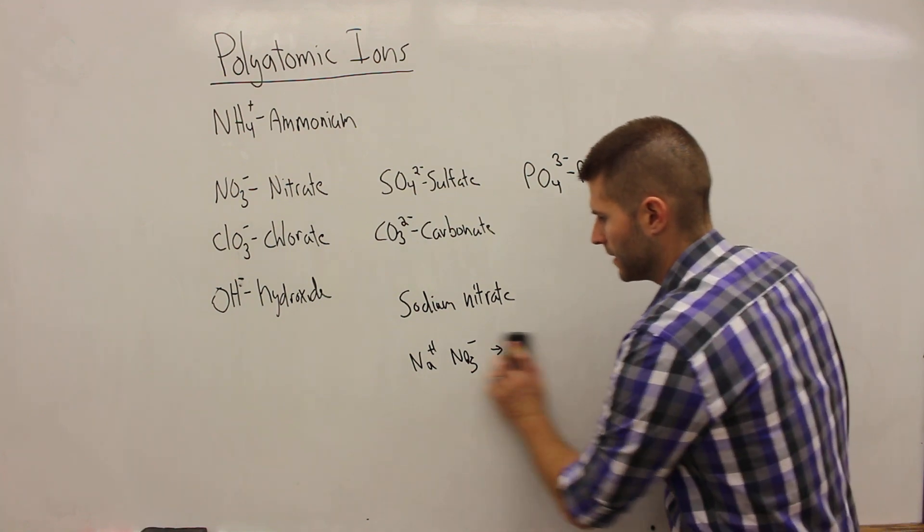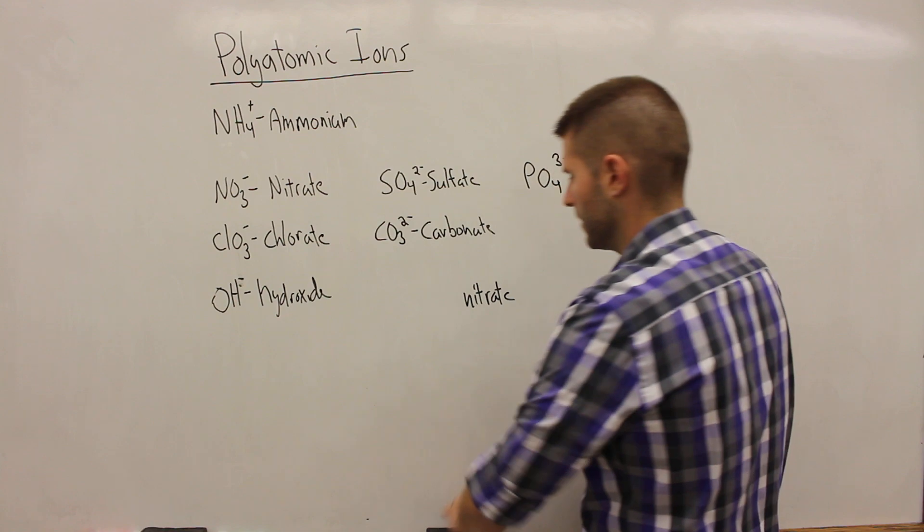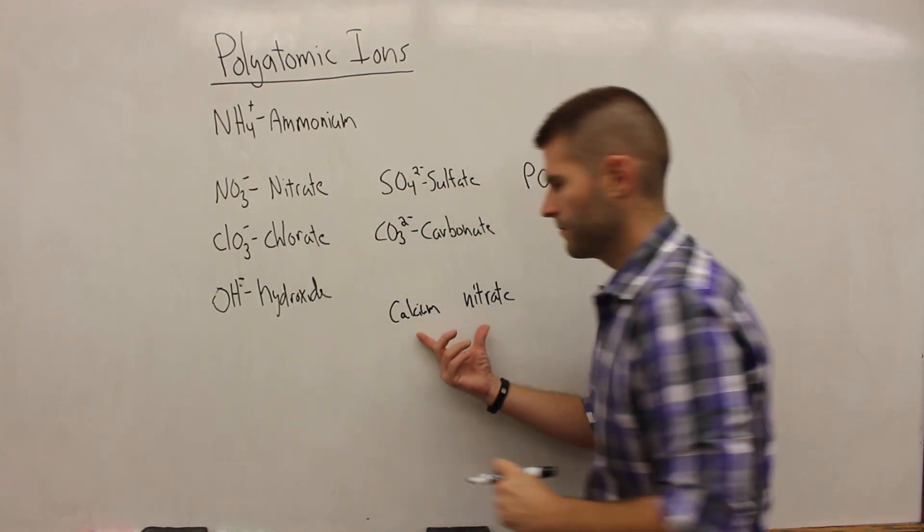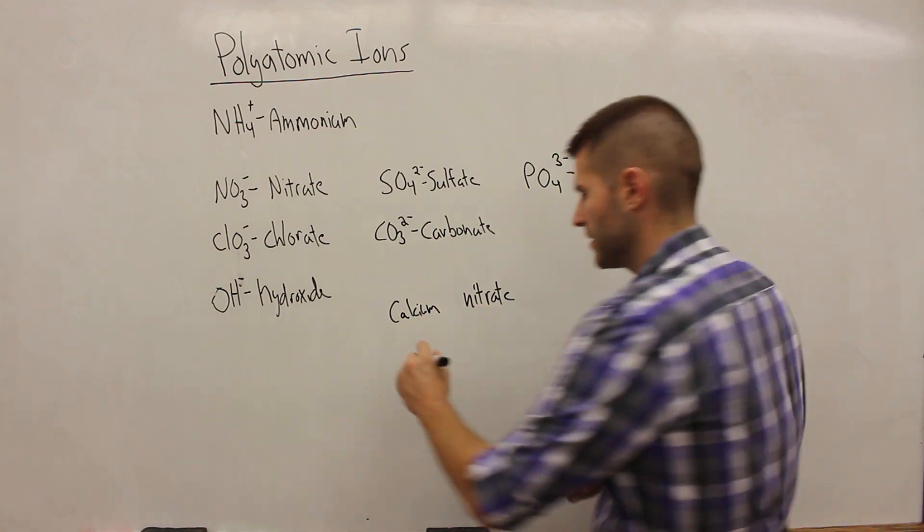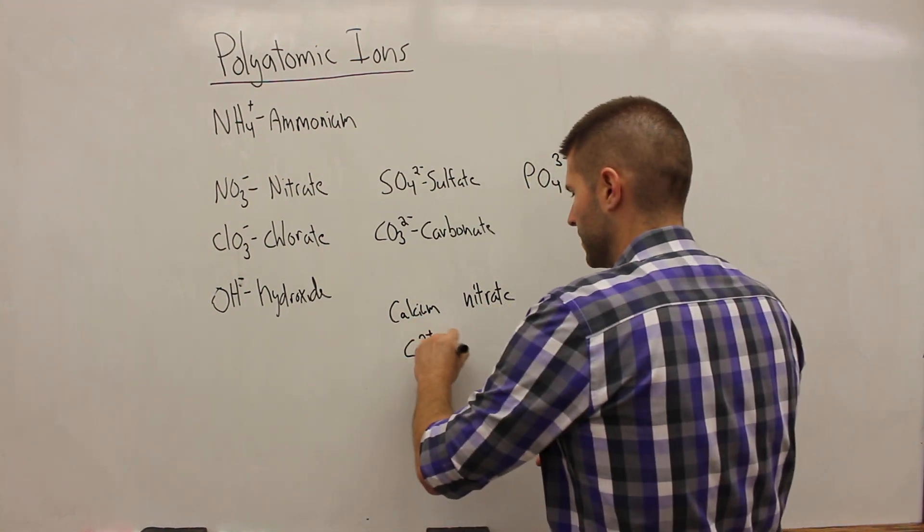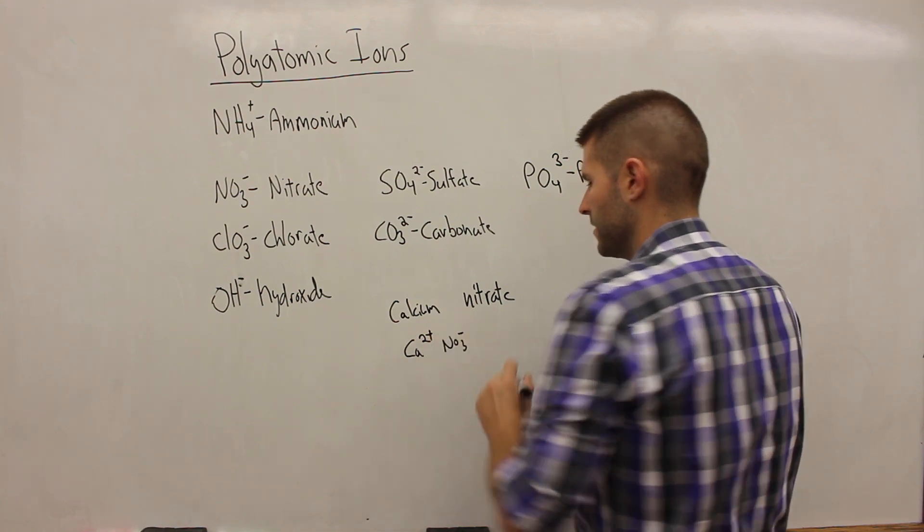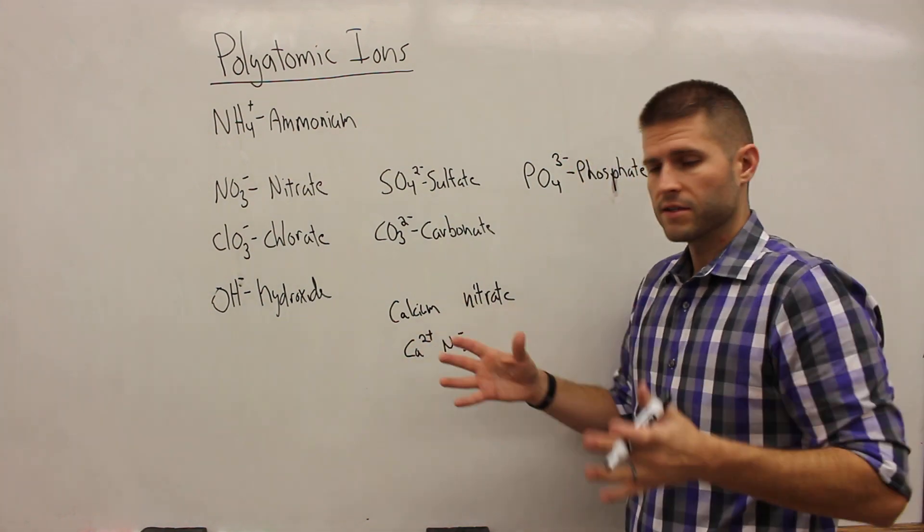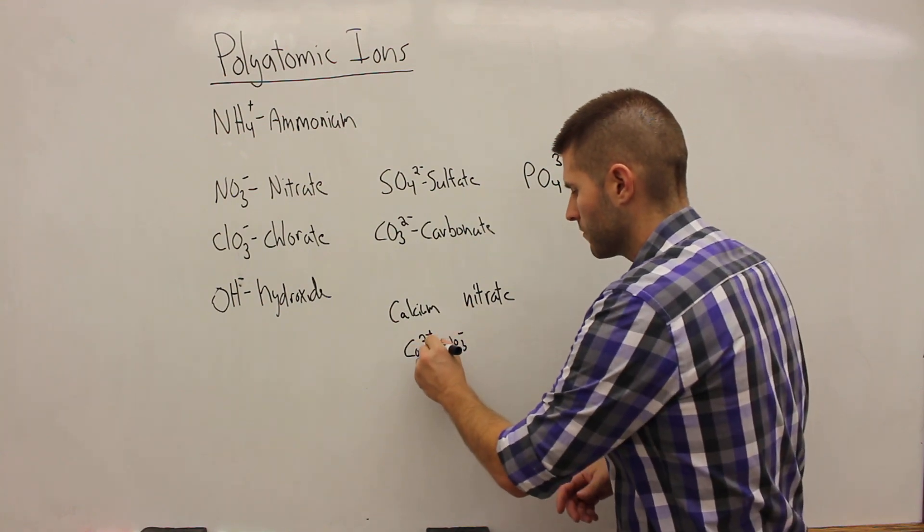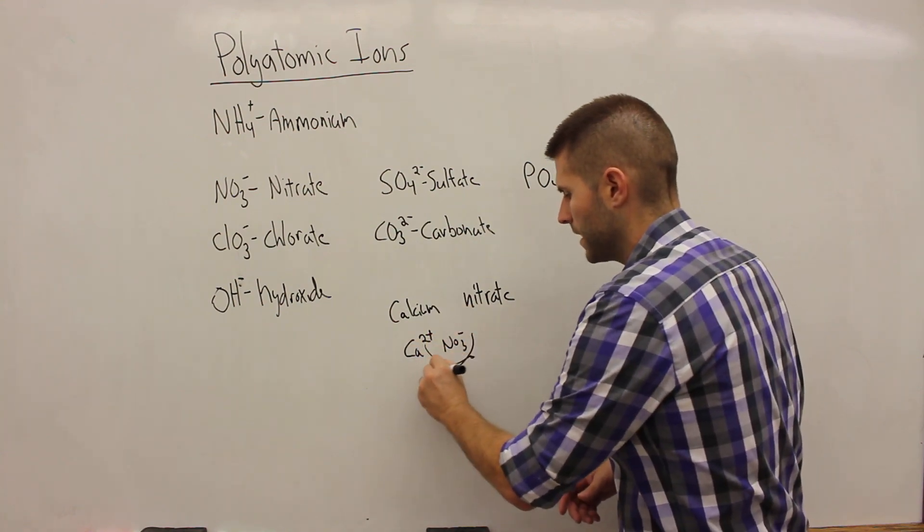Let's try a different example. Let's try calcium nitrate. So here we know that calcium is found in the group 2A. Nitrate is still NO3 minus. So just like we have done previously with all of our ionic bonds, we're going to cross multiply. We're going to bring the 2 down. We're going to bring the 1 down here.